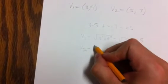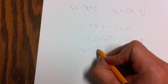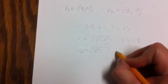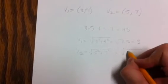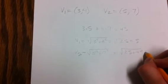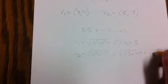For V2, we take the components squared: 5 squared plus 7 squared equals square root of 25 plus 49, which is equal to the square root of 84.